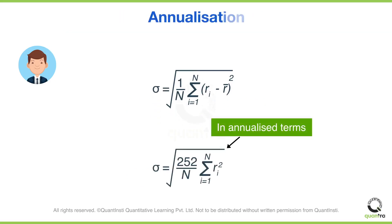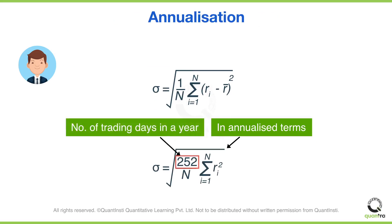It is customary to annualize this by multiplying by the number of periods in a year. If we are using daily returns, we multiply by the number of trading days in a year, which is 252 in the US markets. If we were using monthly returns, we would multiply by 12.